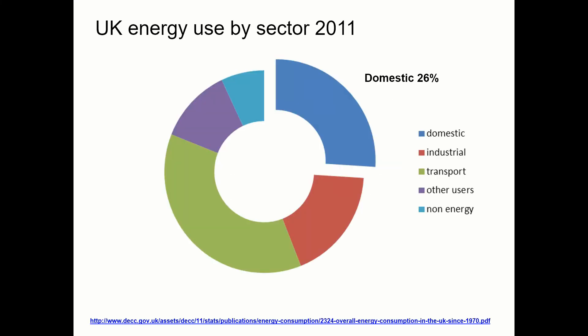In terms of energy, buildings are actually very big energy users — domestic buildings in particular. The only sector larger than domestic buildings is transport, and yet just over a quarter of the energy used in the UK is used in domestic buildings. If we can build buildings that are more efficient — that use electricity or fuel in a more efficient way — then that 26% can be reduced significantly.